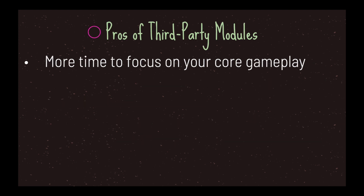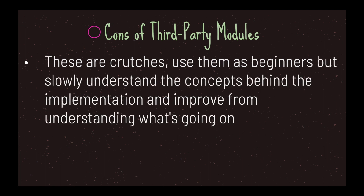The pros for you as a beginner programmer using third party modules is that you have more time to focus on your core gameplay. By downloading code that does what you need, you have more time to focus on other areas. For example, your game needs a dialogue system but it's not part of the core gameplay, so you could focus more time on your shooting physics. However, the negative is that third party modules are crutches. Use them as a beginner, but slowly understand the concepts behind the implementations, because to grow as a programmer you need to let go of third party modules and start learning how to implement them yourself.